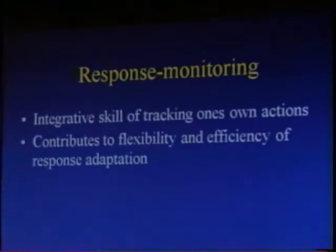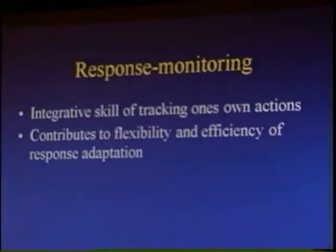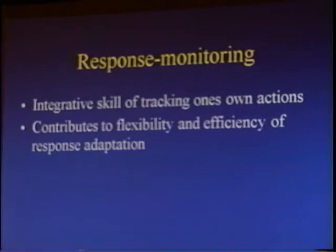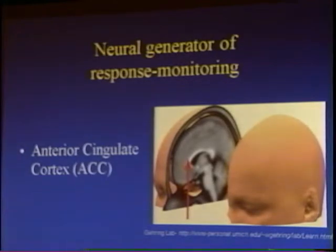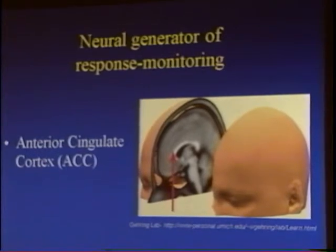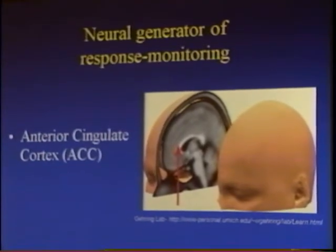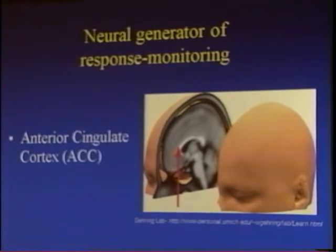Remember that theme — the interaction between behavioral inhibition and anxiety disorder — because it comes up in the next two sets of data. The third aspect of attention we've been interested in is something called error monitoring. Error monitoring, or response monitoring, is the ability to track one's actions. It is associated with flexibility and efficiency of response adaptation, and both functional neuroimaging and electrophysiological studies suggest that the anterior cingulate cortex is associated with control over this response monitoring ability.